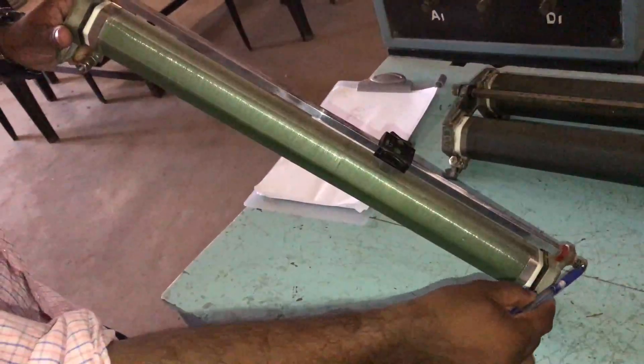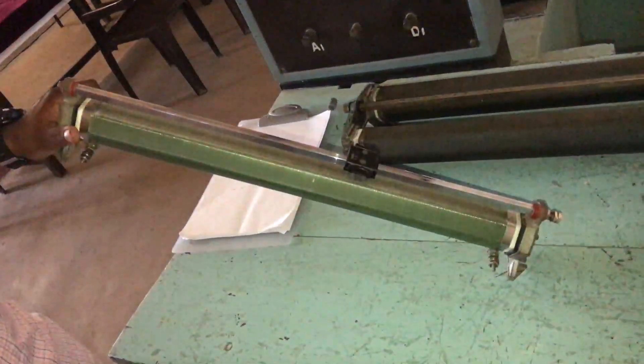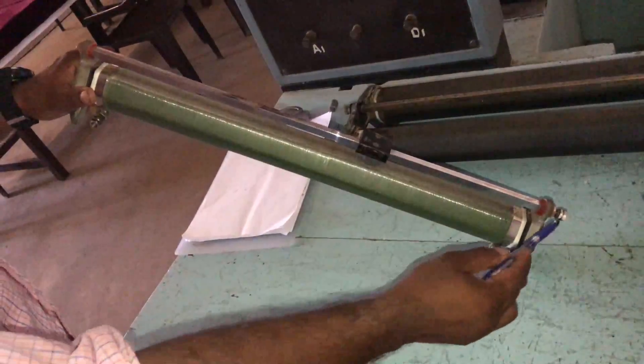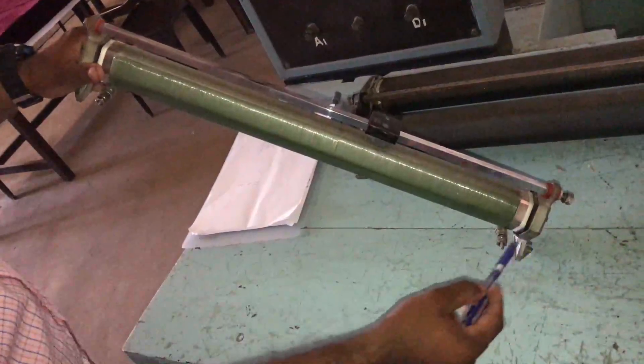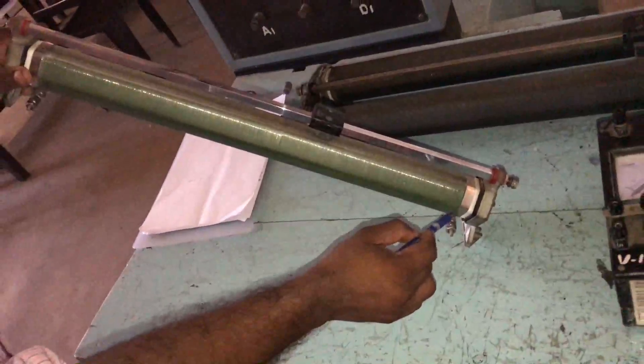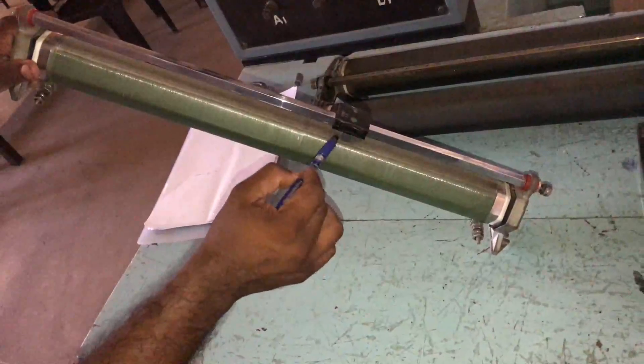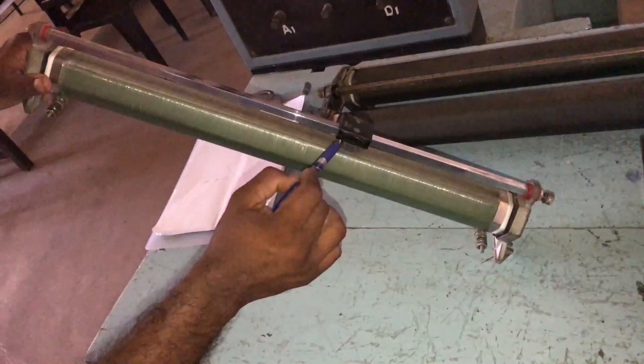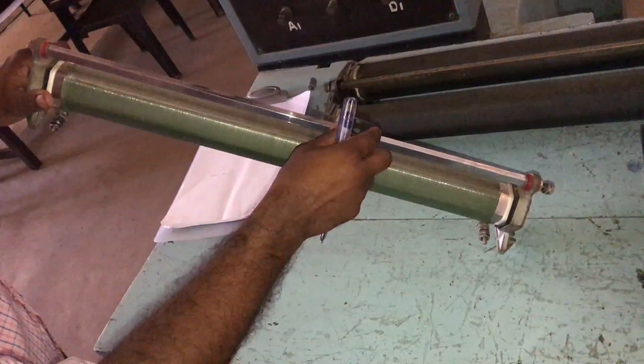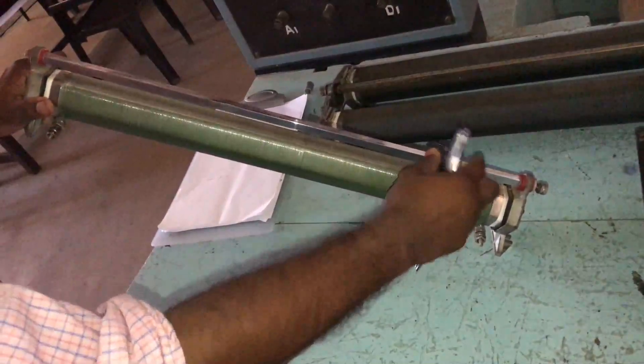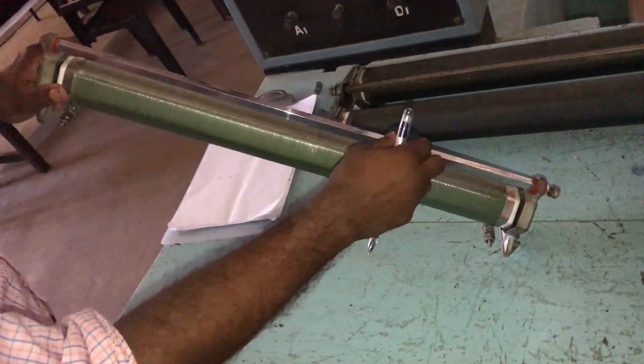Whenever the variable resistance is used, one terminal is connected here and another terminal is connected here. Current passes through this coil, then receives here, then passes through this point which is the variable point. Whenever you vary this point, current will pass through the coil.